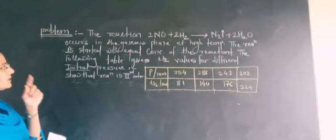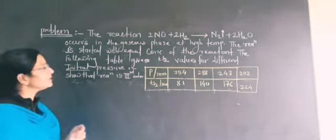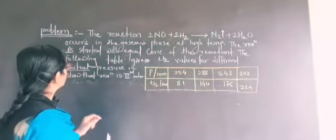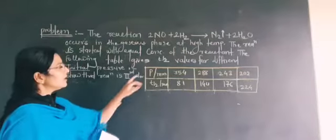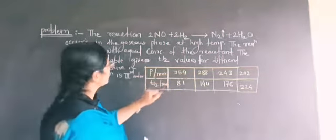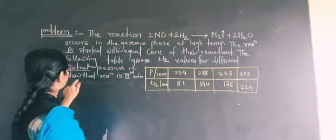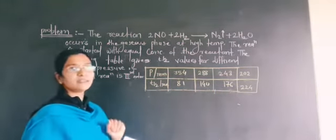The reaction is started with equal concentration of the reactants. The following table gives T1/2, the half-life period, varies for different initial pressures at which the reaction is started.